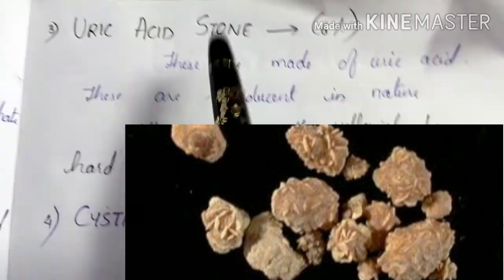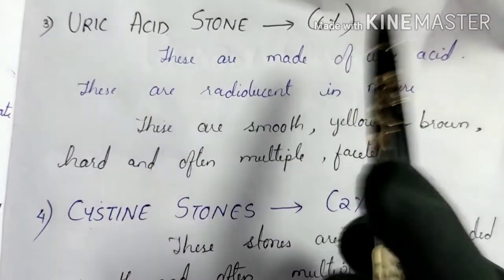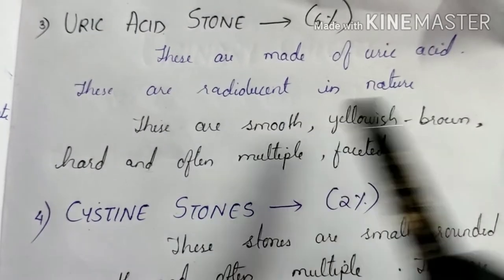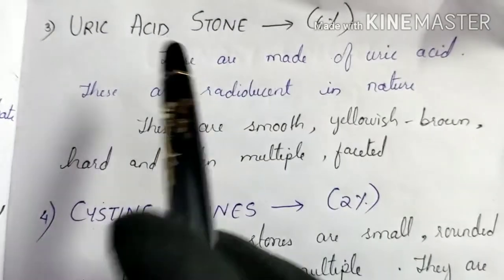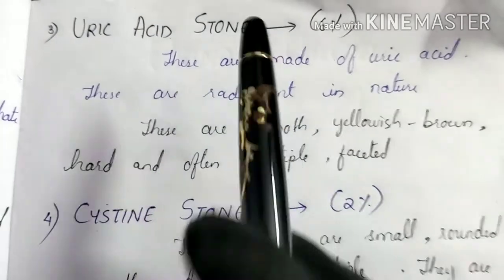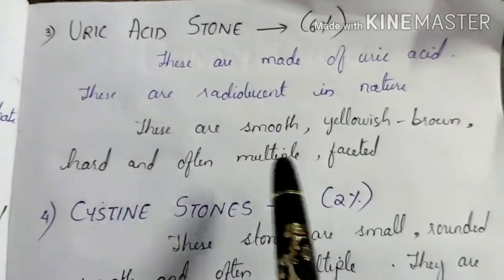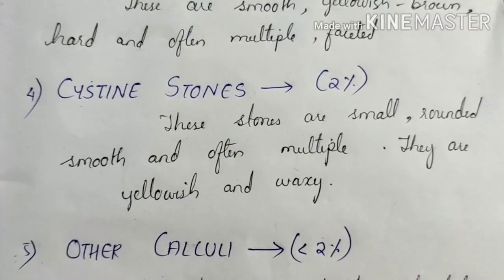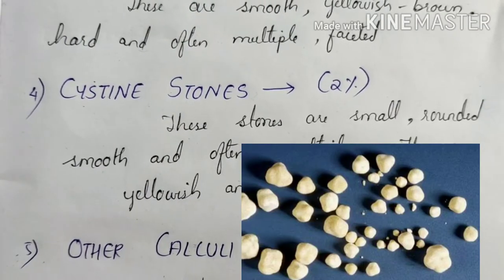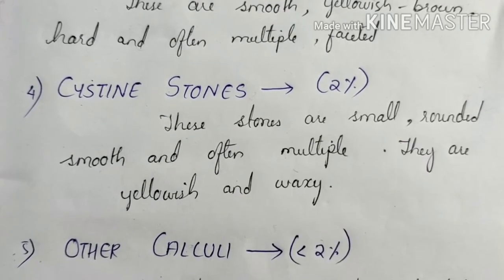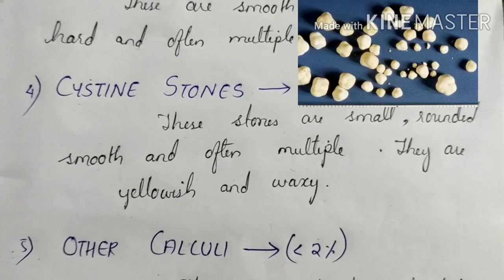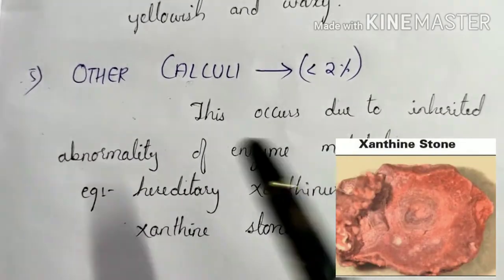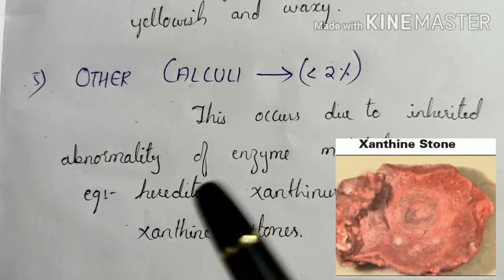Third is uric acid stone, accounting for only 6% of urinary calculi. These stones are made up of uric acid and are radiolucent — they cannot be seen on X-ray, but if they contain calcium oxalate they become opaque. They are soft, yellowish brown in color, and often multiple. Fourth is cystine stone, accounting for only 2% of urinary calculi. These stones are small, rounded, smooth, and often multiple; they are yellowish and waxy. There are other types of calculi accounting for less than 2%, occurring in cases of inherited abnormalities of enzyme metabolism.